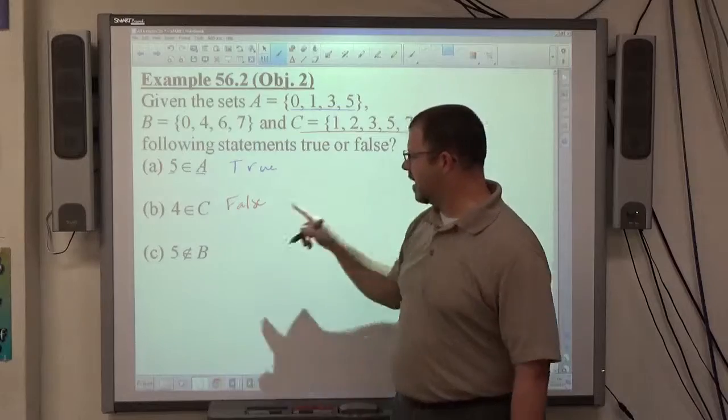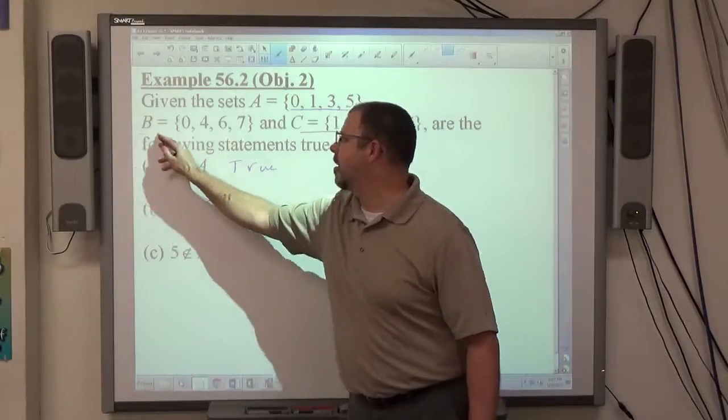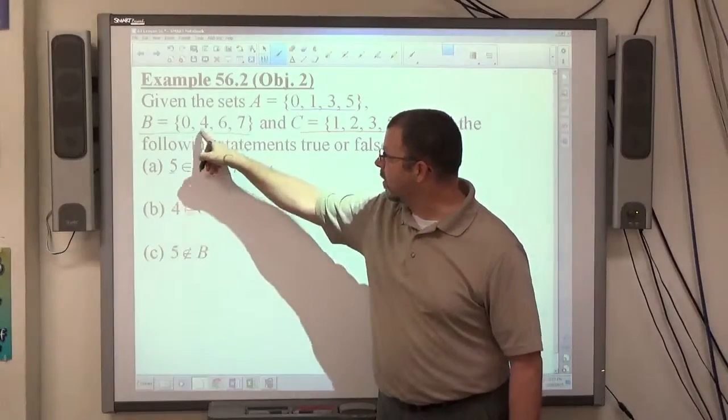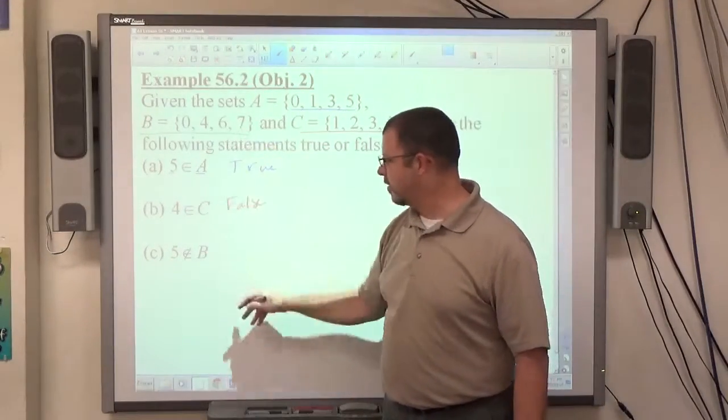But look at the last statement. 5 is not an element of B, so we look at set B. This is telling me 5 is supposed to not be in set B. I look at set B, I see 5 isn't in it, so that's going to be true.